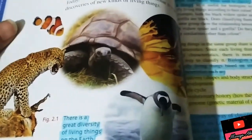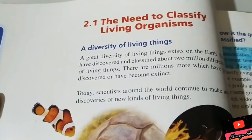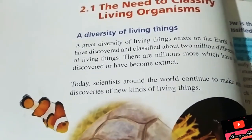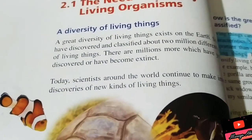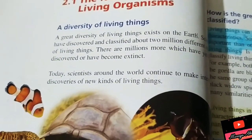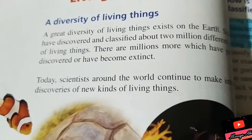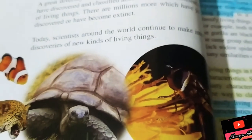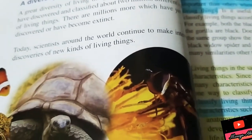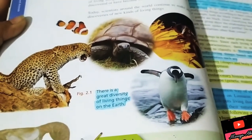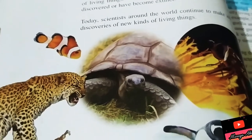Now let's move to our topic: 'The Need to Classify Living Things'. There is a great diversity of living things on Earth. Scientists have discovered and classified about two million different types of living things. Today, scientists around the world continue to make new discoveries of new kinds of living things, whether they live in the sea, on land, or in polar regions.